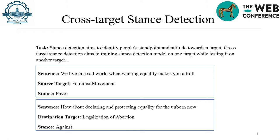Suppose there is no annotated data for the destination target, such as legislation of abortion — it's unseen in the training dataset. Cross-target stance detection aims to build stance classifiers trained on features extracted from contextual source targets, which might be relevant to the destination targets, so as to alleviate the sparsity or lack of annotated data for the stance detection of destination targets.